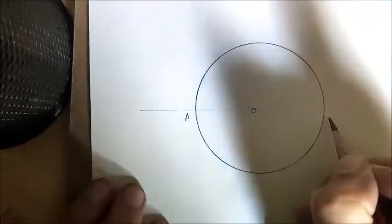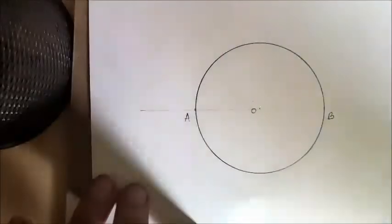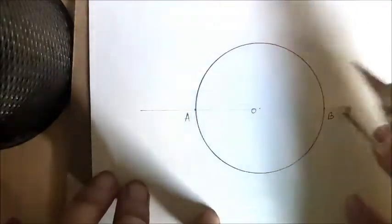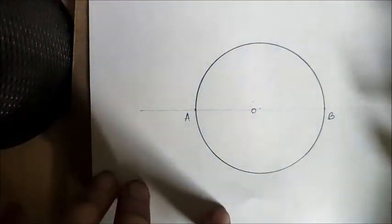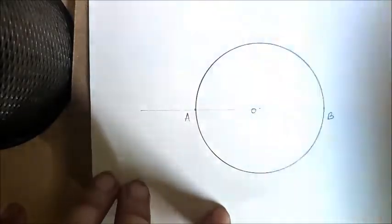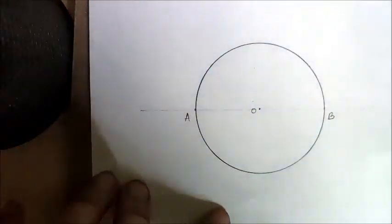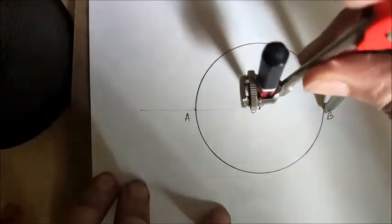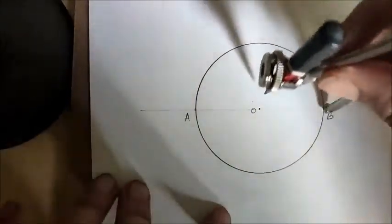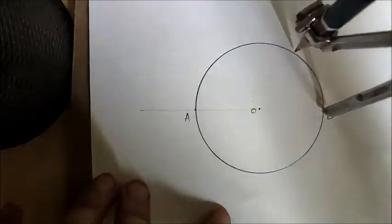We will name this diameter as A and B. The points where this line is intersecting our circle are A and B. Now, OB is the radius, right? Keep your pointer on B with the distance of the radius and intersect the circle.